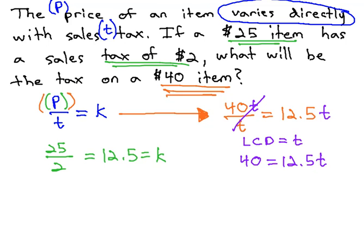Finally, get the t alone by dividing both sides by 12.5, and we find out the tax on this $40 item is 3.2, or $3.20.